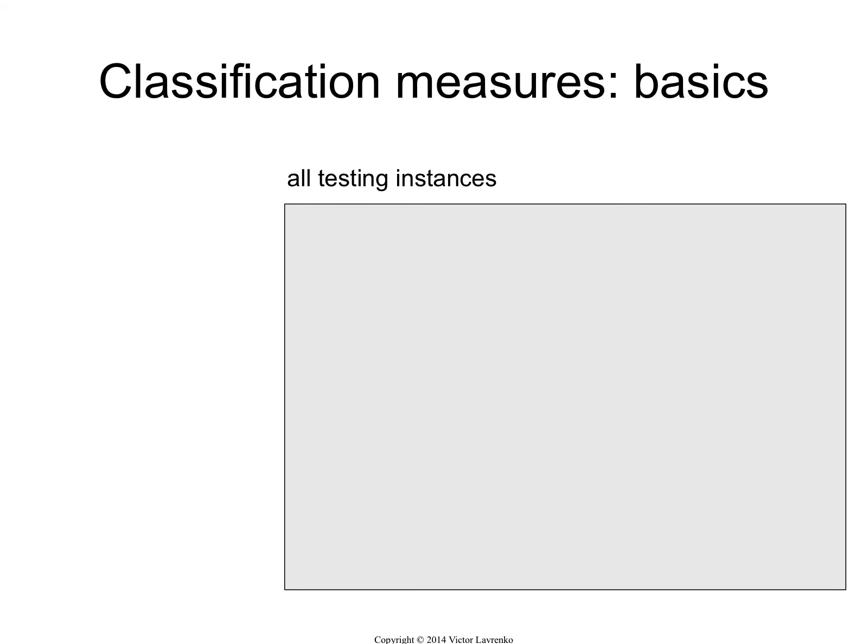Let's talk about classification first. In classification we have some basic building blocks. We're going to take those building blocks and build a bunch of different accuracy measures out of those blocks.